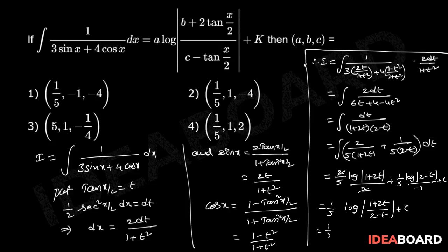Substituting back t equals tan(x/2), we get 1 by 5 into log of modulus of 1 plus 2 tan(x/2) by 2 minus tan(x/2) plus c. Therefore a equals 1 by 5, b equals 1, c equals 2. So the correct answer is 1/5, 1, 2 — that is the fourth option.